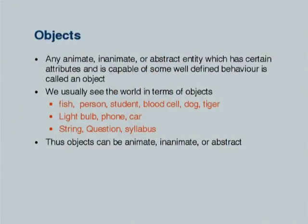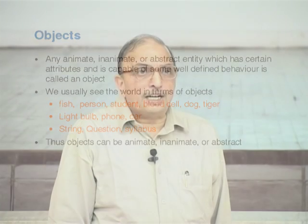Essentially the observation was that we read the world in terms of objects. The objects could be animate objects such as fish, person, student, a blood cell, dog, tiger — these are living organisms. They could be inanimate objects such as a light bulb, a phone, or a car. They could also be abstract objects — a string, question, syllables. These are abstract objects.